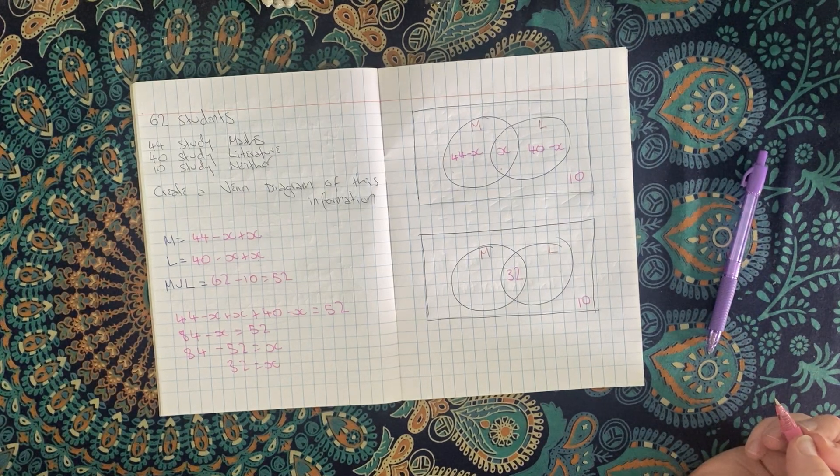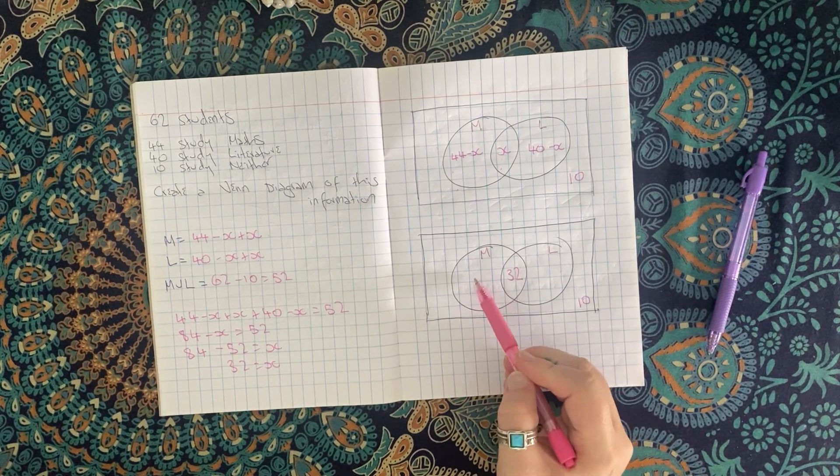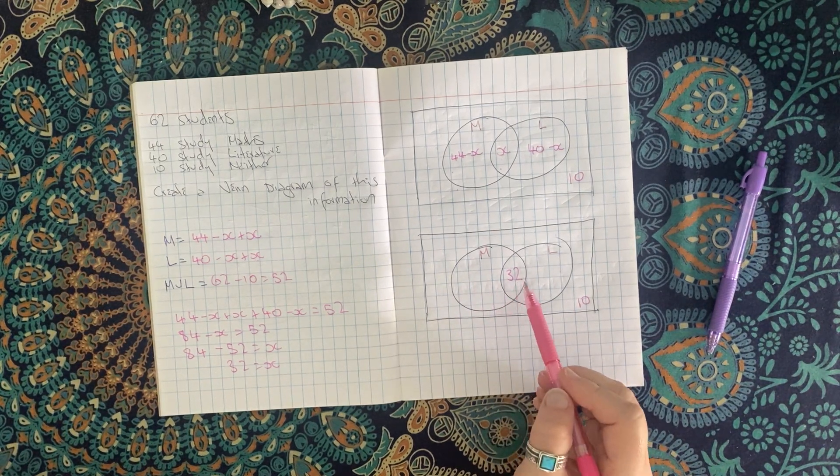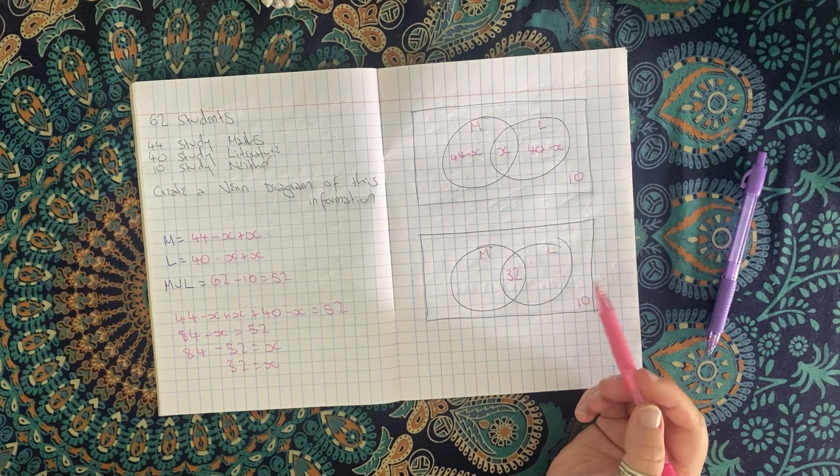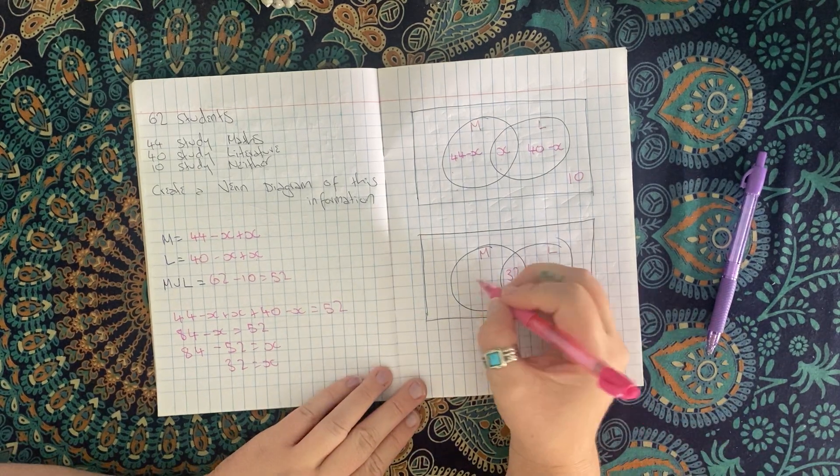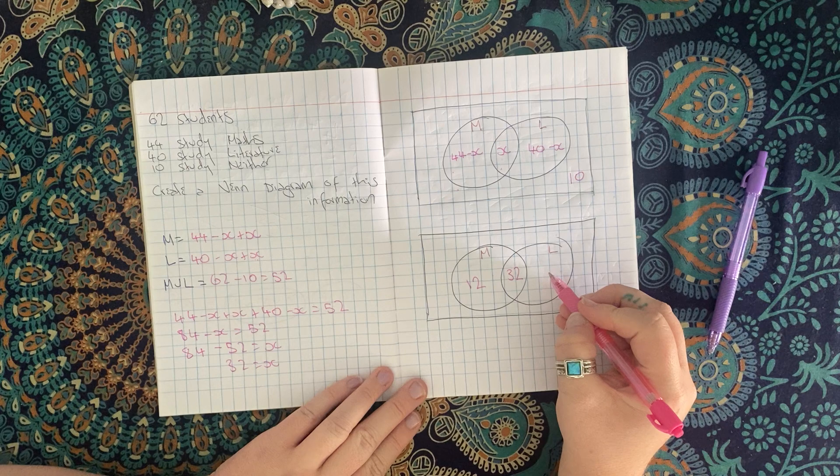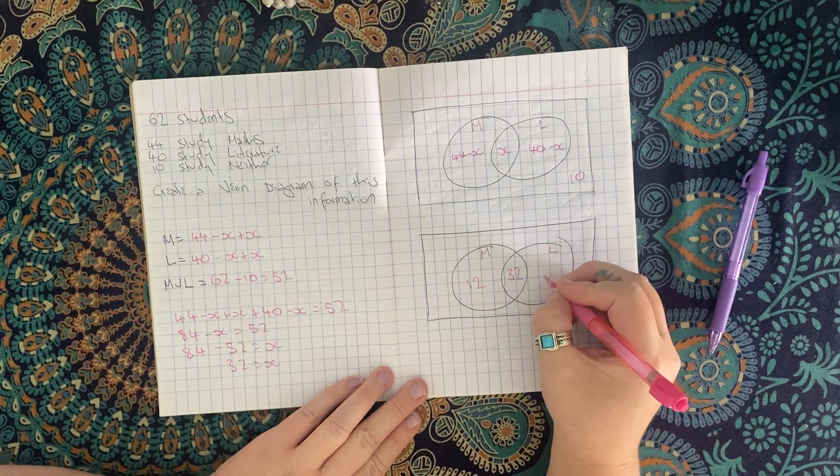So then I can go backwards from here and work out what this is. This is 44 minus X, so 44 minus 32, that's relatively simple, it's just 12. And then this bit is 40 minus 32, which gives me 8.